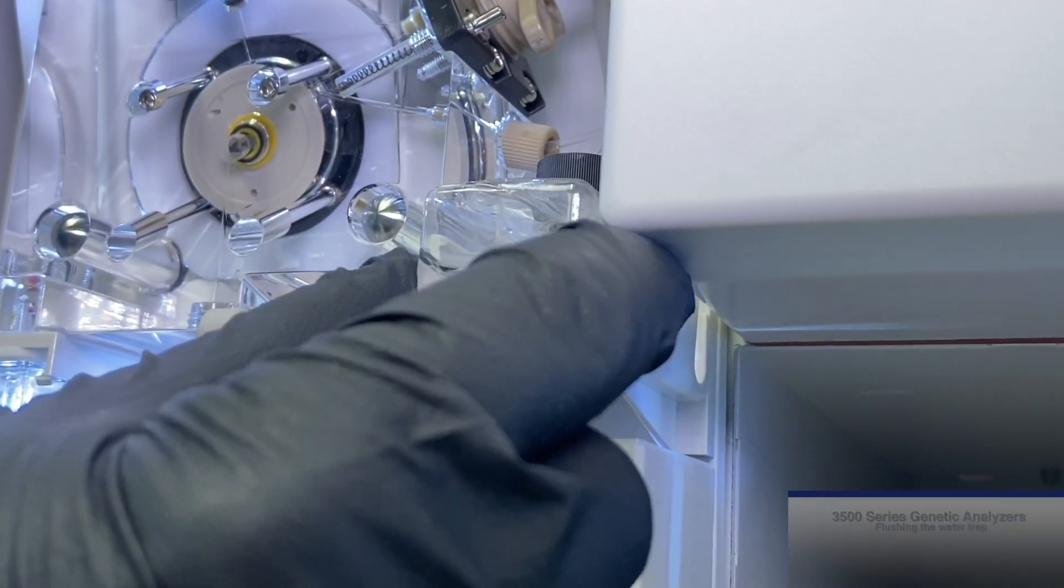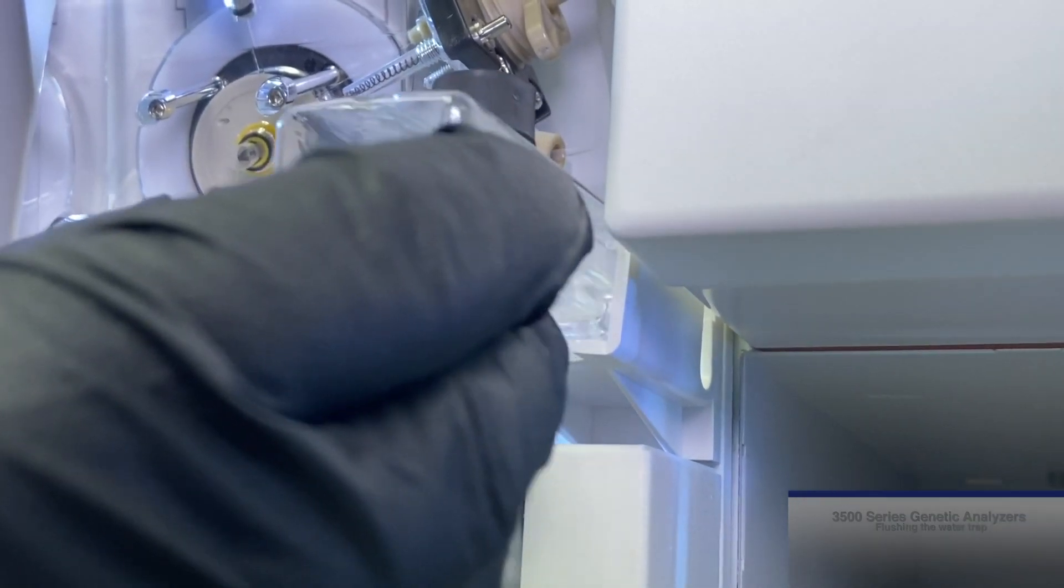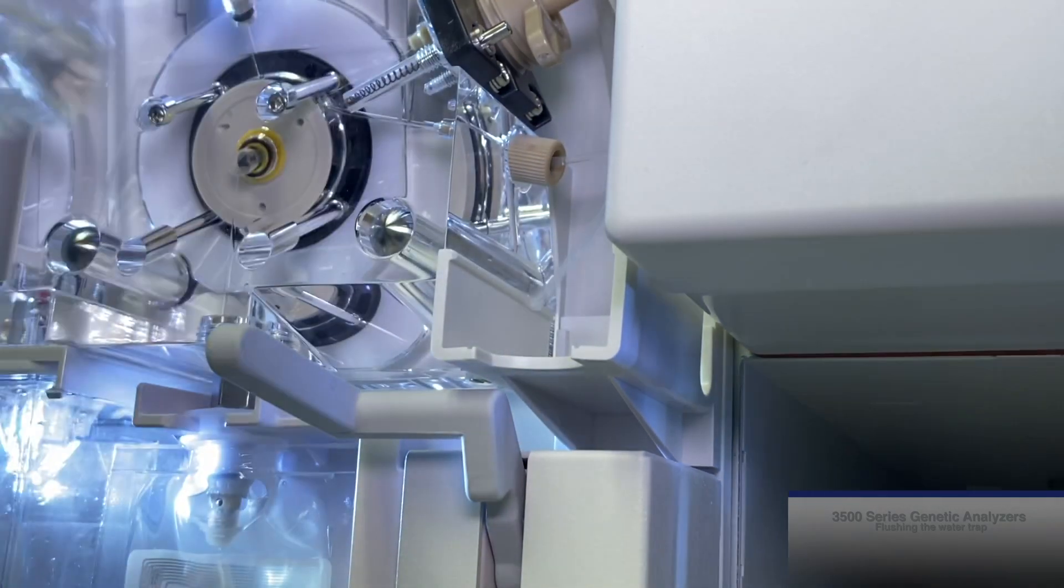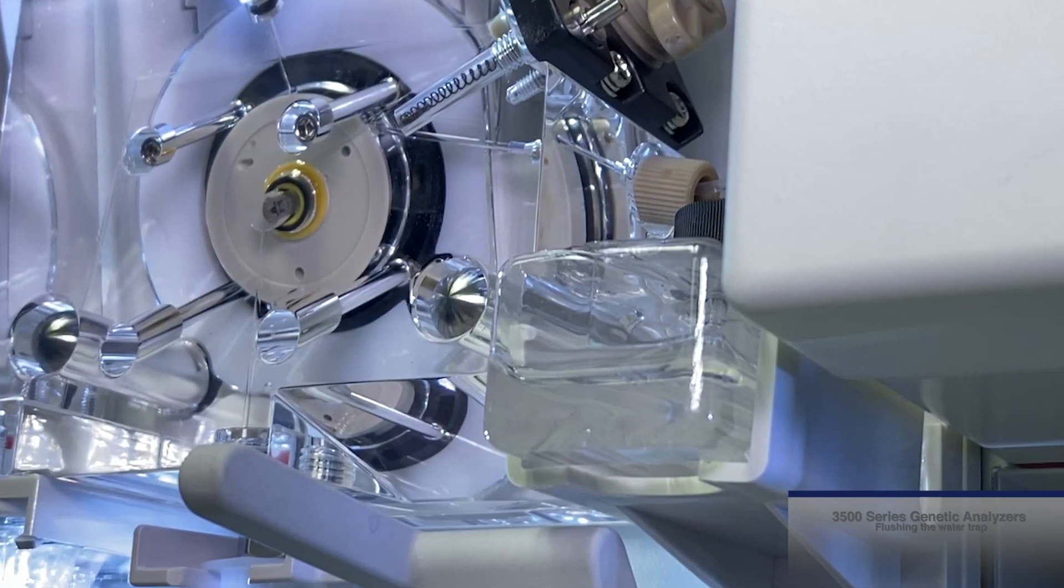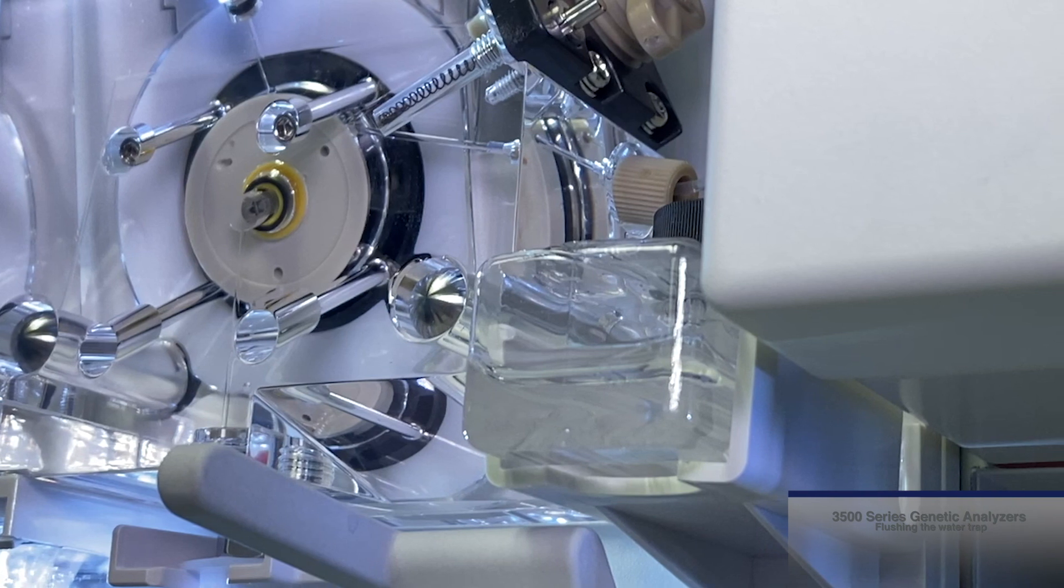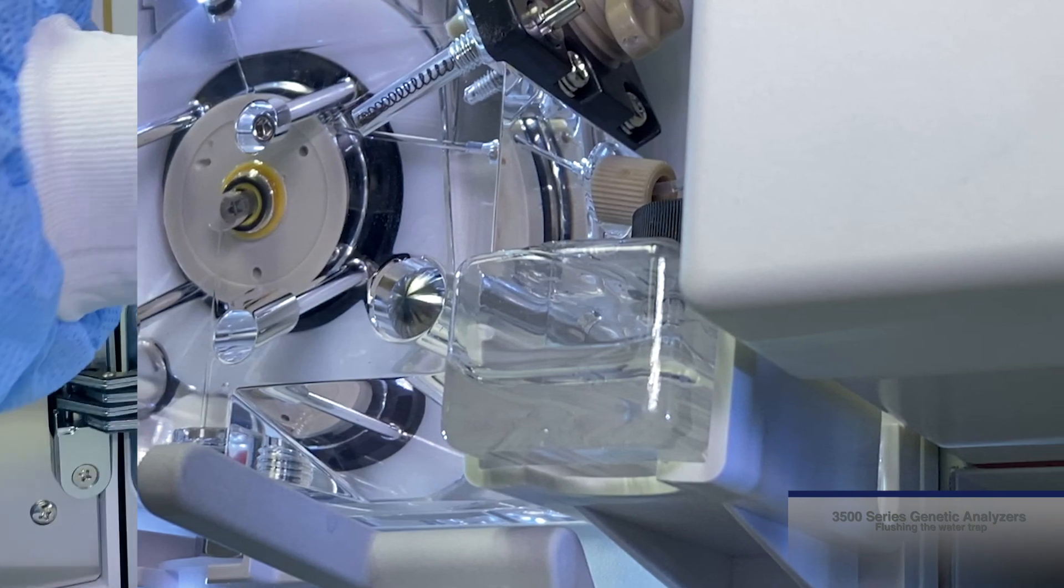Once complete, empty the water trap waste container which collects the water that was flushed through the water trap. This water trap waste container can be removed prior to flushing the water trap and replaced with an empty beaker to catch the water.